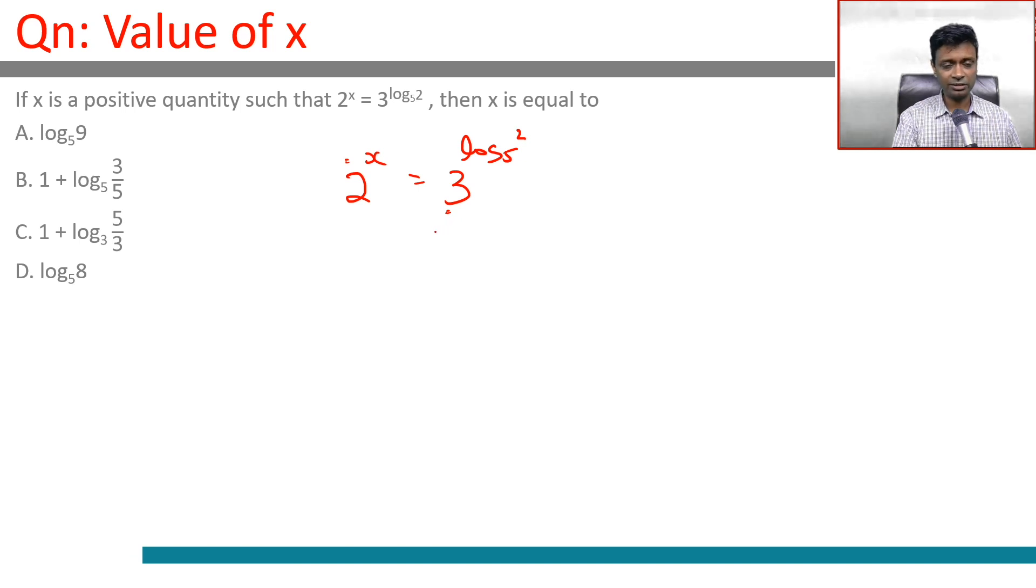One of my favorite tricks for a question like this is take log on both sides. Log of 2^x is log of 3^(log_5(2)), or x log 2 is log_5(2) times log 3.